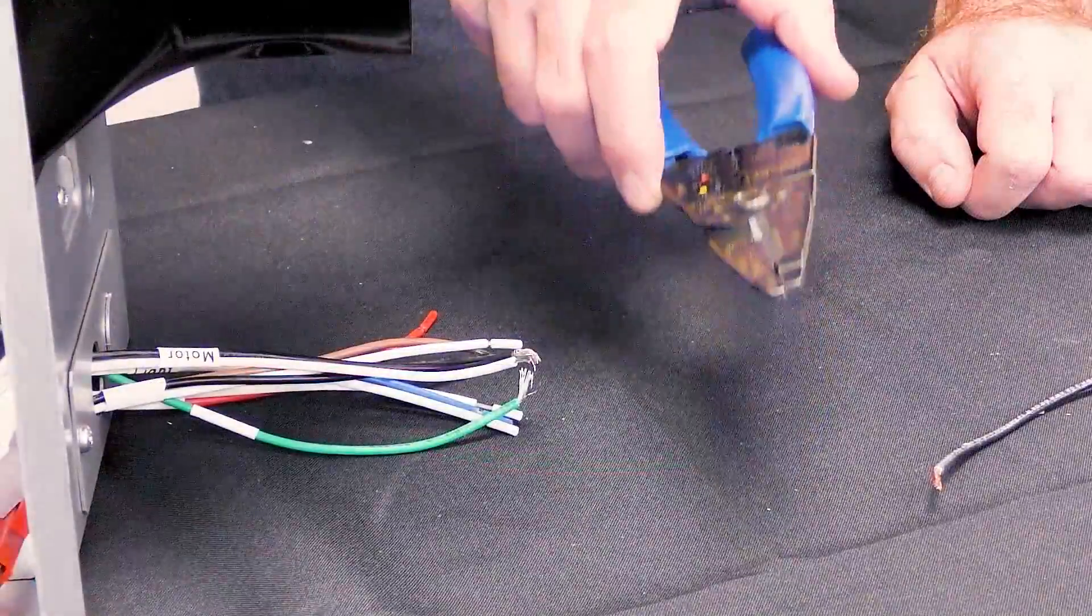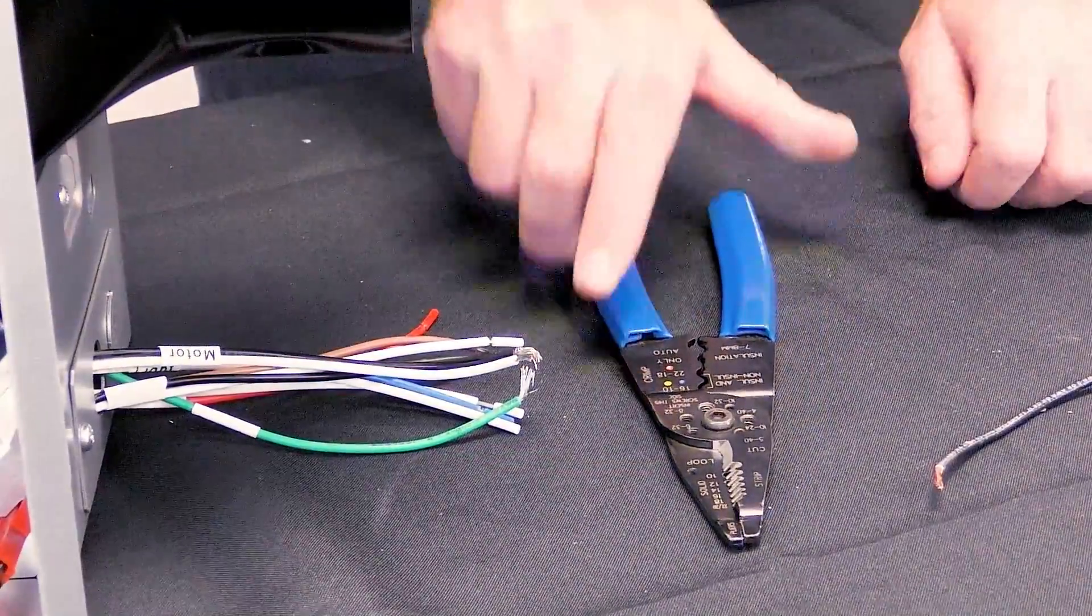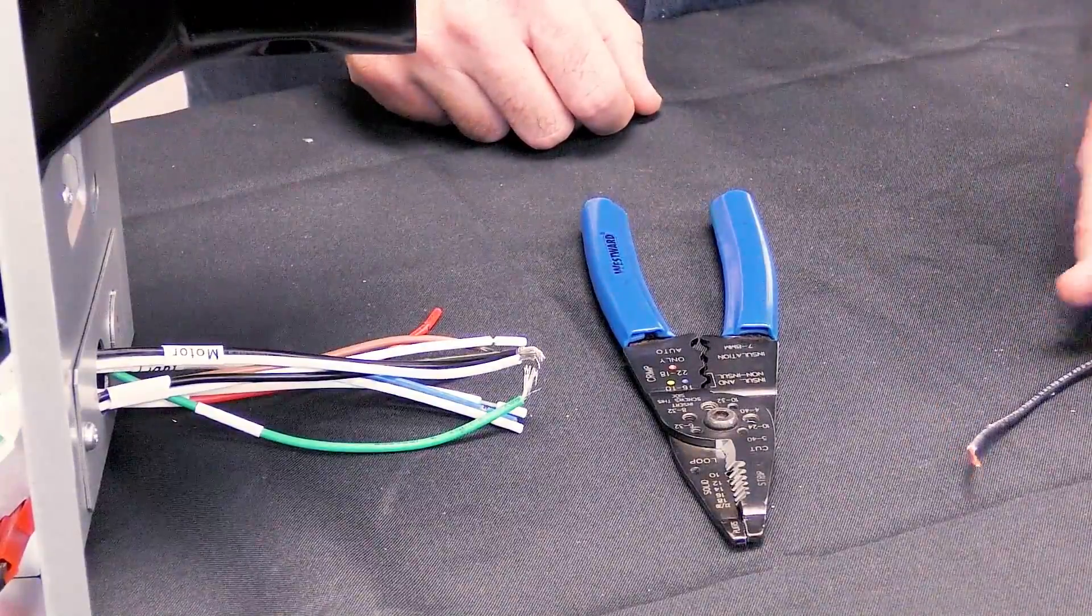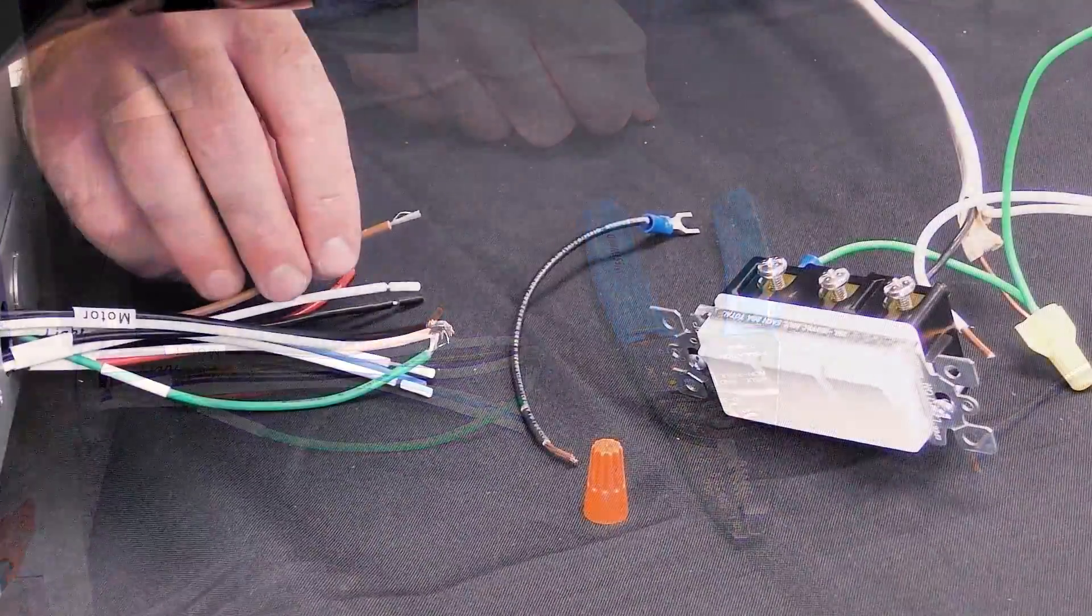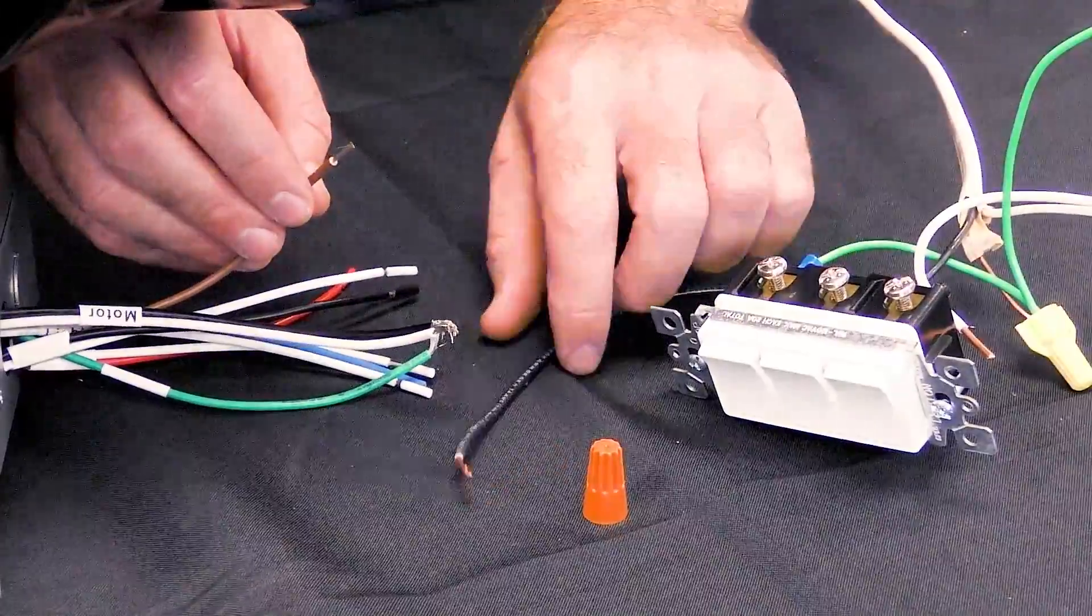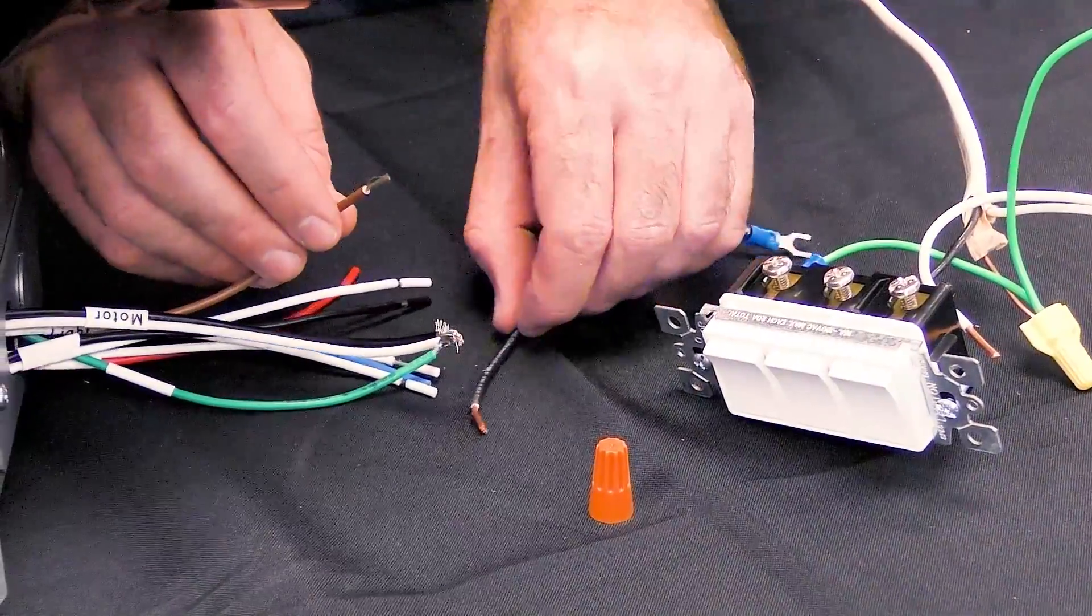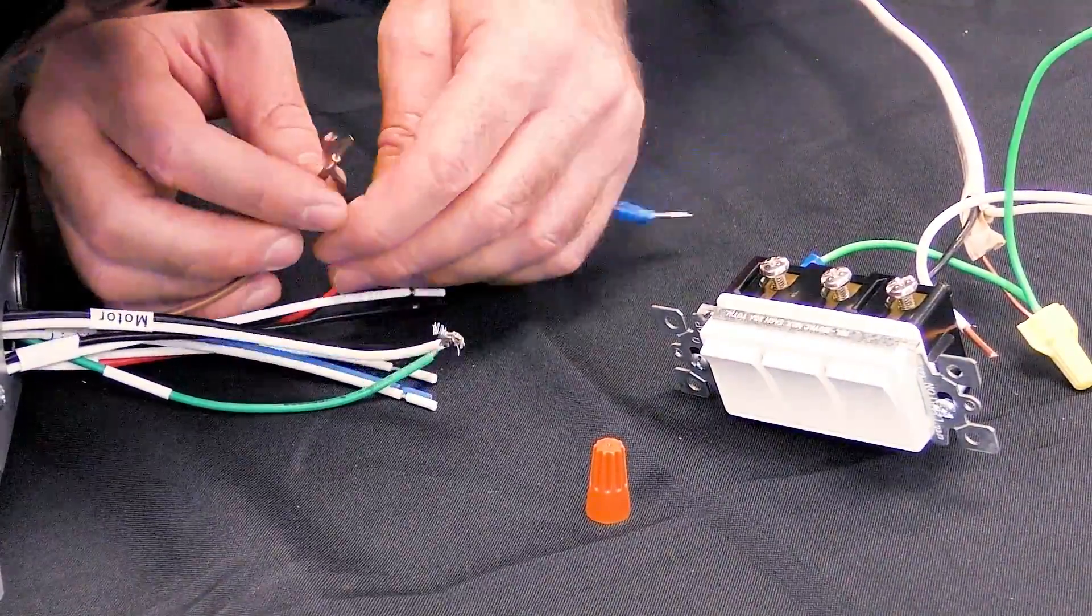Using your wire strippers, strip a half-inch off incoming building supply wire. Next, connect the brown wire from the control module to the load side of the switch.